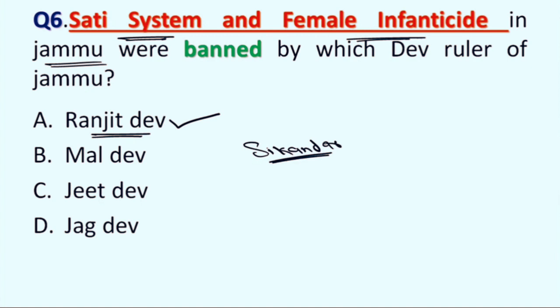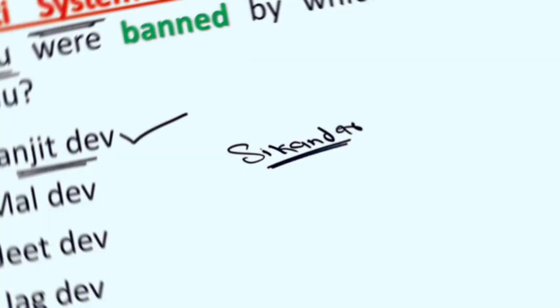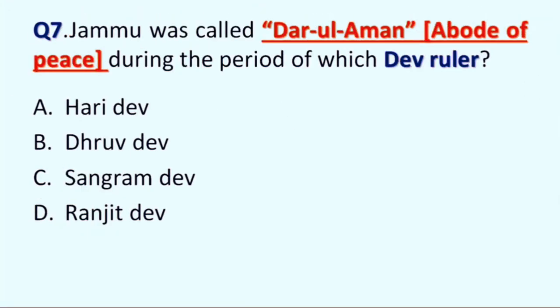Next question is: Jammu was called Darul Aman, meaning abode of peace, during the period of which Dev ruler? Option A: Hari Dev, B: Dhru Dev, C: Sangram Dev, and D: Ranjit Dev. Correct answer is Option D, Ranjit Dev.